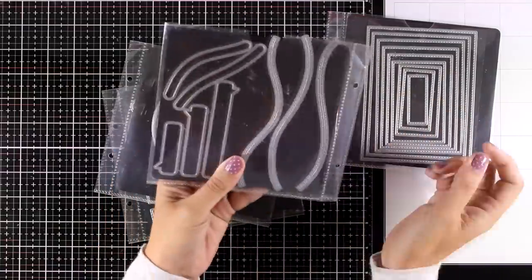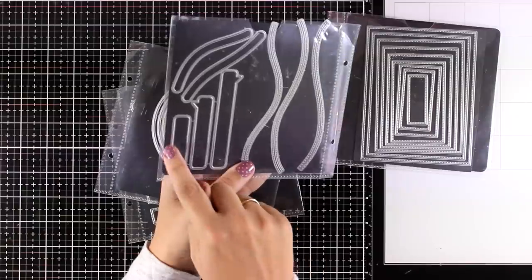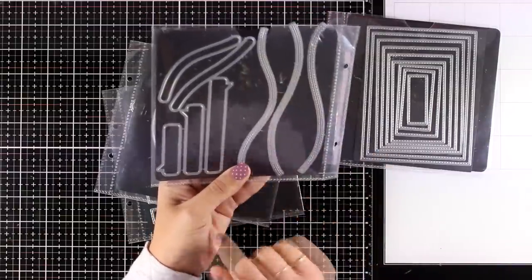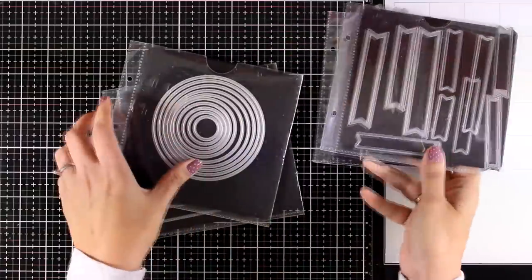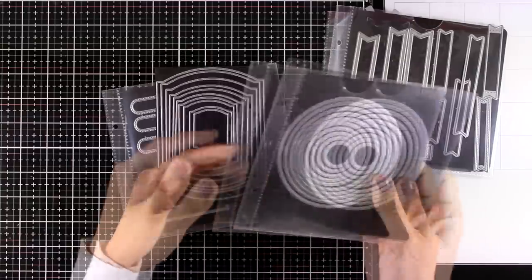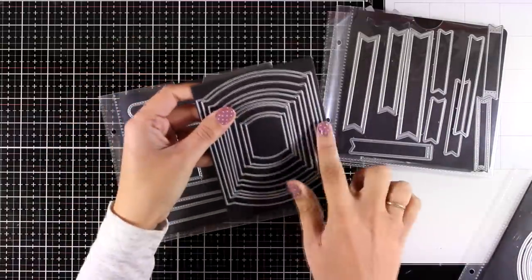Another dies that I absolutely love are those speech bubbles they come in three different sizes so you can stamp different size of sentiments. And I also love the hit the slopes because they give you those curved lines that you can cut out to create hills as well as snowbanks.